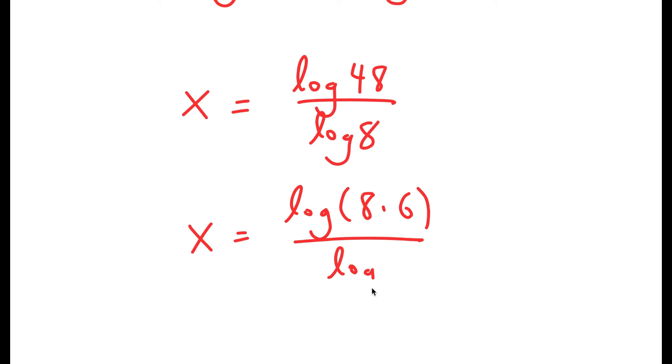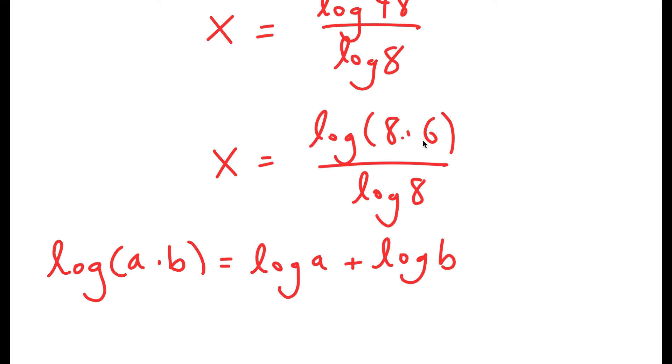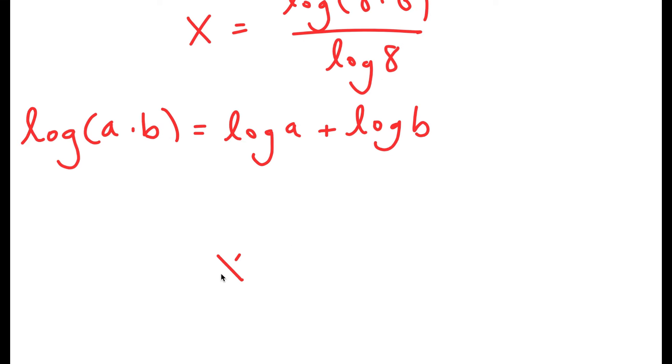And the reason I did this is because I can use another property of logarithms that states that if I have something in the form log of a times b, this is equal to log a plus log b. So in this case, I have log 8 times 6, and this is going to turn into log 8 plus log 6 using this property. And I have all of this over log 8.